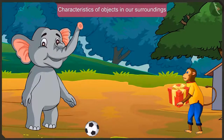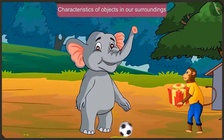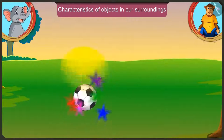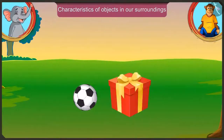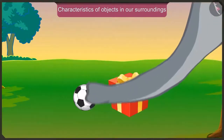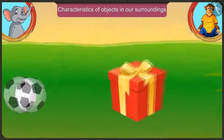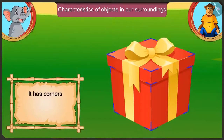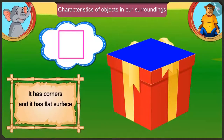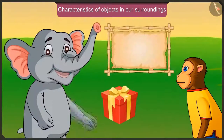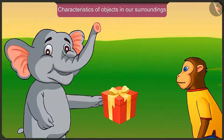Appu, how is it possible that I roll my box just like your ball? Look at this — this is your ball, and this is my box. Just touch it and see. Is it in the shape of your ball? No, this is not round like my ball. It has sharp corners on all sides, and because it has a flat surface, it can be slid and moved, but it cannot be rolled.